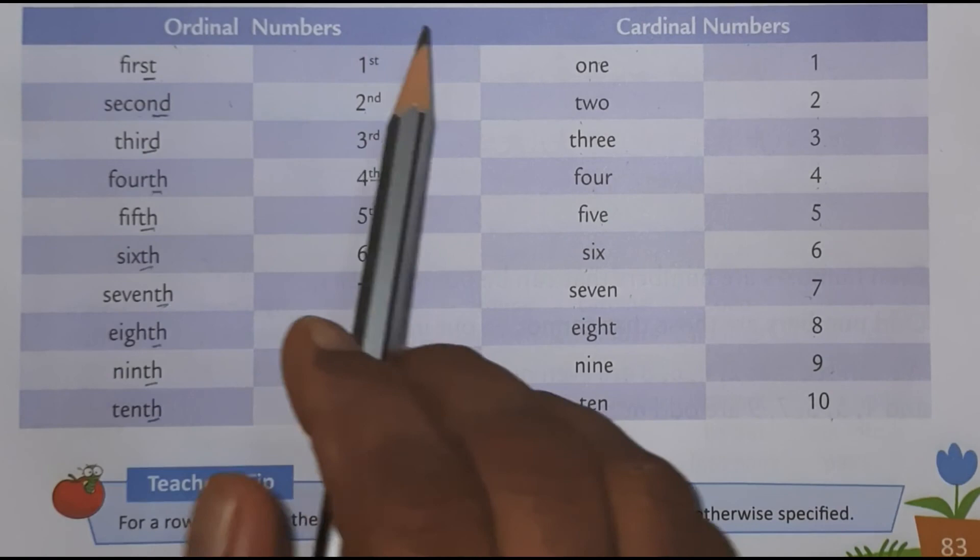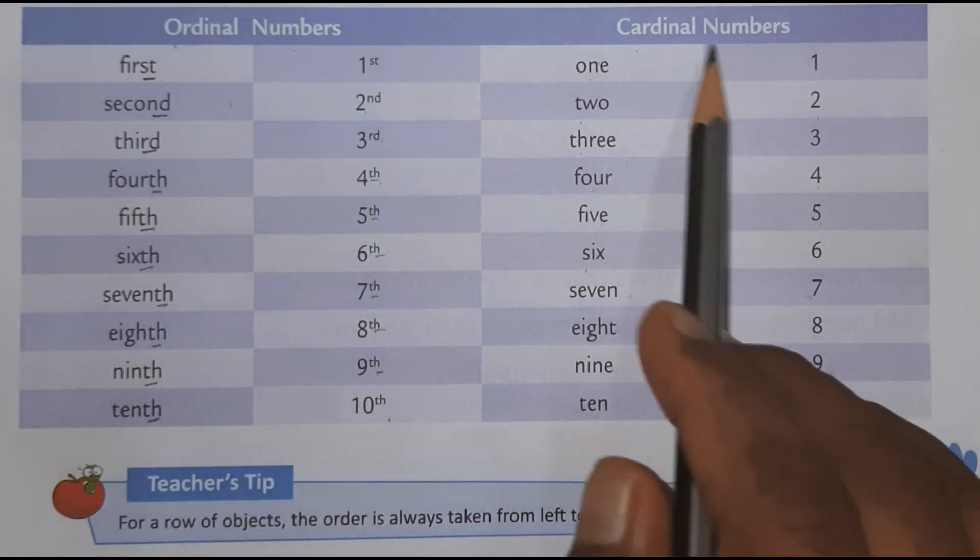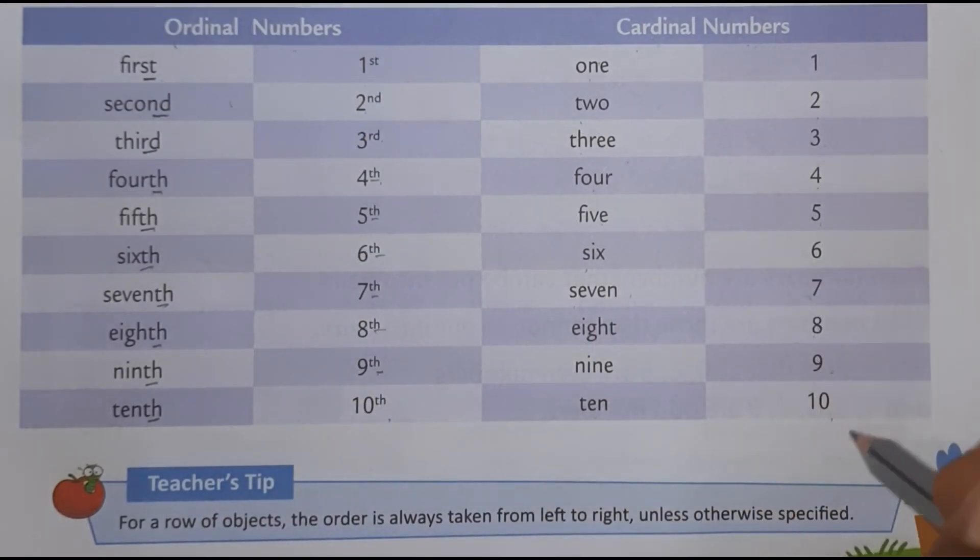So this is ordinal number means position and cardinal number means simple numbers. So like this you have to read two times in the textbook and then after that you have to write in notebook.